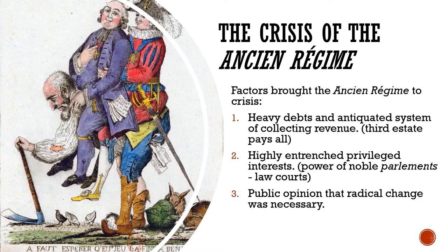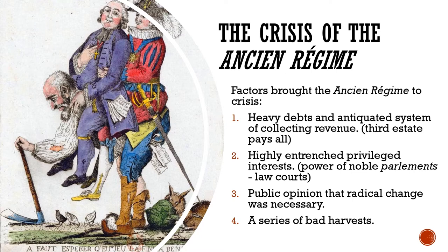The fourth factor, which leads to the tipping point of the French Revolution, is that in the summers before the revolution there was a series of very bad harvests. Due to weather patterns, there was not a lot of food to go around, and the price of bread skyrocketed. There were people literally starving in the streets on the eve of the French Revolution. This was the match that would light the fire of the French Revolution.